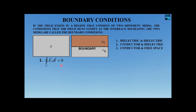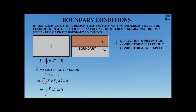Since E is conservative, del cross E equals zero. Taking the double integral of both sides and applying Stokes' theorem — which states that the closed integral of E dot dl equals the surface integral of (del cross E) dot dS — we can prove our first mathematical tool. Our second mathematical tool is Gauss's law in dielectrics.